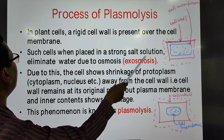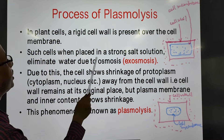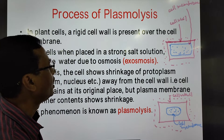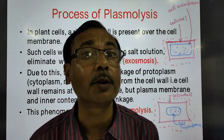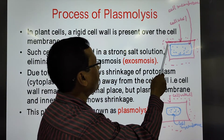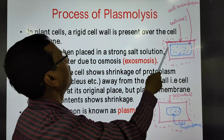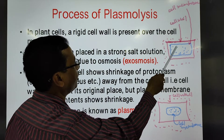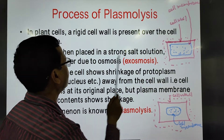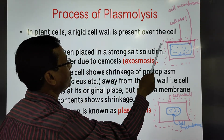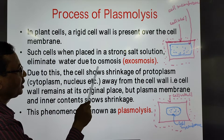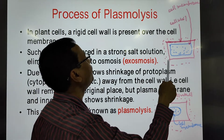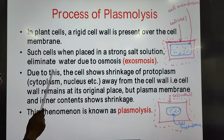When such cells are placed in a strong solution, they eliminate water due to osmosis. If a plant cell is placed in a hypertonic solution — a strong salt or sugar solution — water will be lost from the plant cell into the surrounding medium. This process is called exosmosis, because water is moving out of the cell.